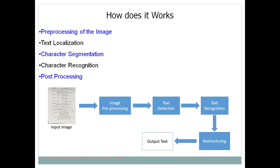In modern machine learning and deep learning approaches, you first need to train your model by providing a dataset in an appropriate format — normalized, with all images of the same size and dimension. You may use an annotation tool like LabelImg to annotate the text present in images, teaching the model how to detect and localize text so it understands which regions of the image contain text.